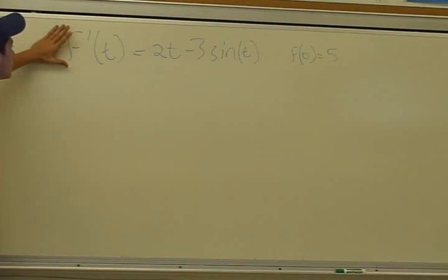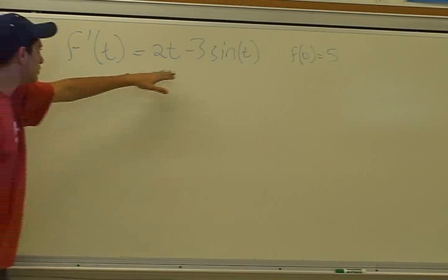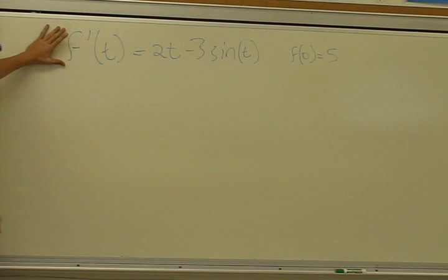This problem right here, they provide us with the derivative of f of t, which is f prime of t, as we see right here. And they ask us to find the original equation, which is f of t.